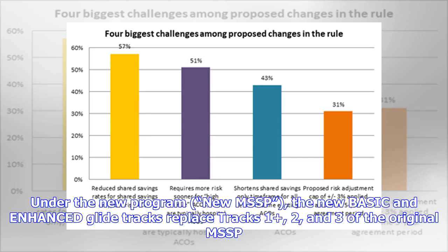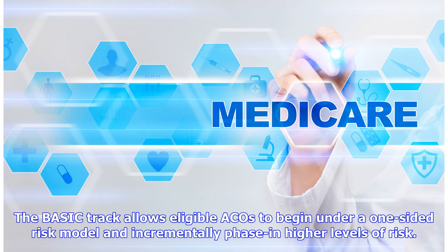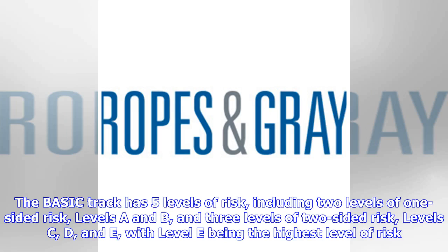The Basic Track allows eligible ACOs to begin under a one-sided risk model and incrementally phase in higher levels of risk. The Basic Track has five levels of risk, including two levels of one-sided risk — Levels A and B — and three levels of two-sided risk — Levels C, D, and E — with Level E being the highest level of risk.